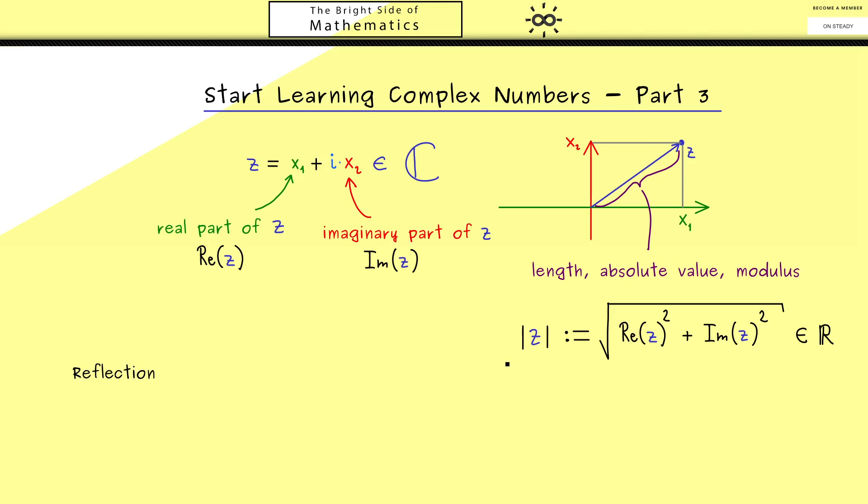Now I can tell you for calculating this absolute value a reflection we can do in this plane is very helpful for us. Indeed this reflection we will do now is called the complex conjugate of the complex number z. So what we do is just flipping the arrow. So we reflect it on the green line. This means that we don't change the real part but only the imaginary part. And indeed we just change the sign of the imaginary part.